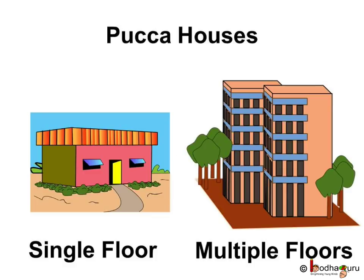As the pakka house is strong, it can have many floors. Big cities have big buildings called apartments. There are many flats or houses in a single big building where many families can stay.